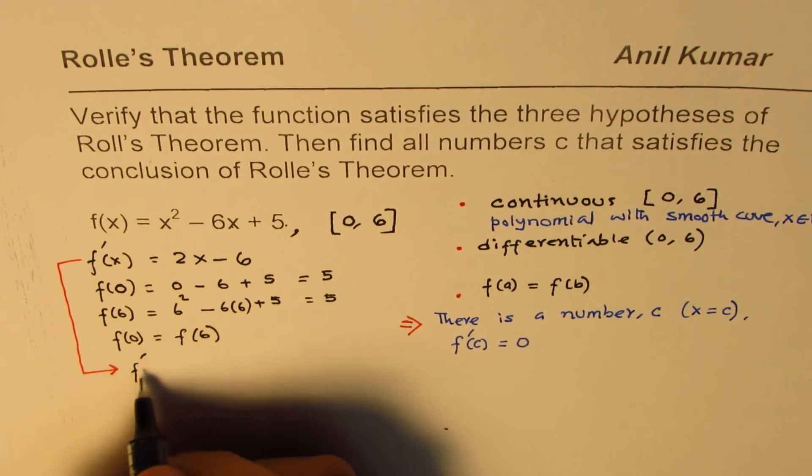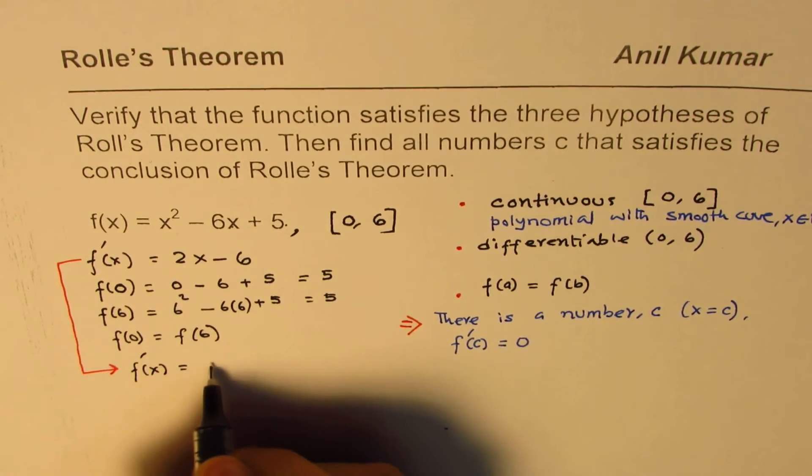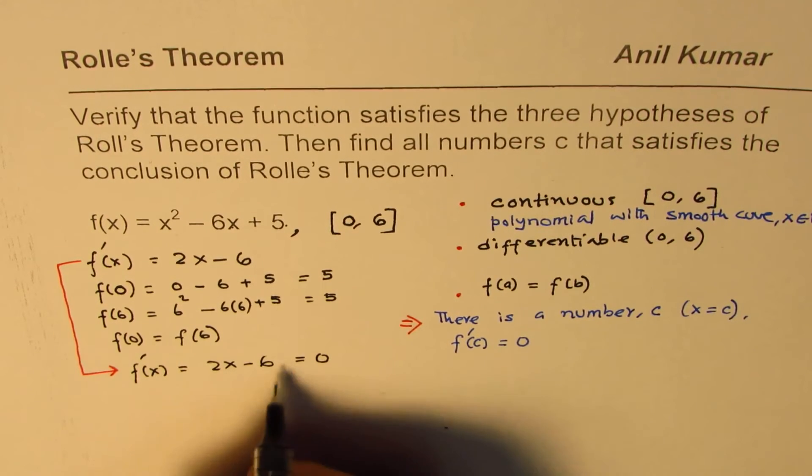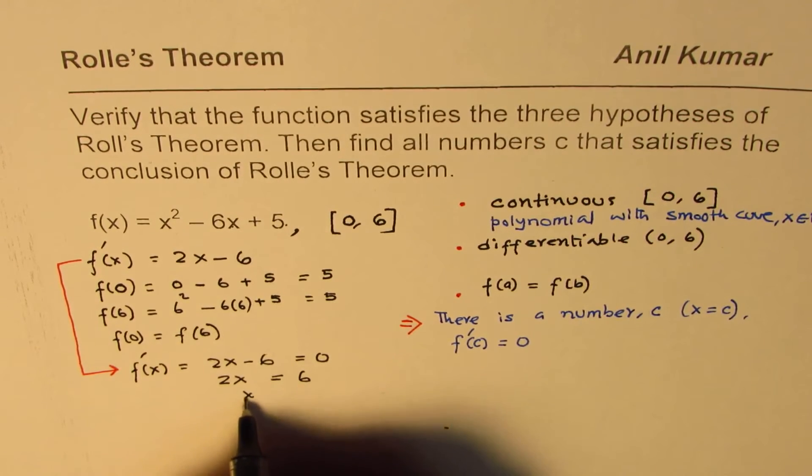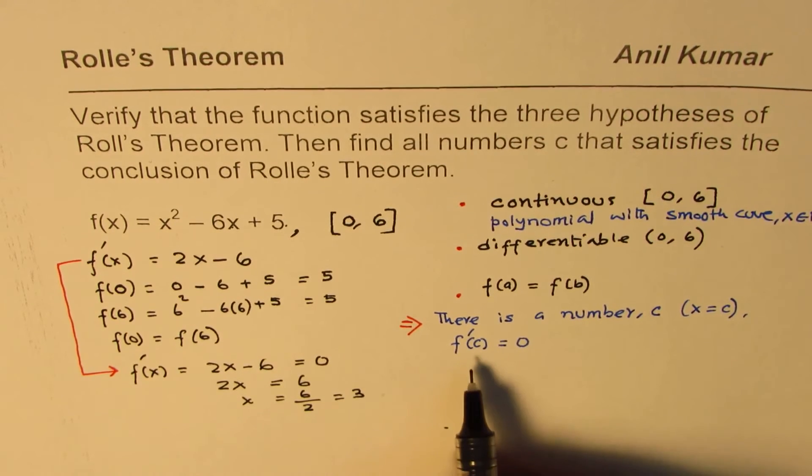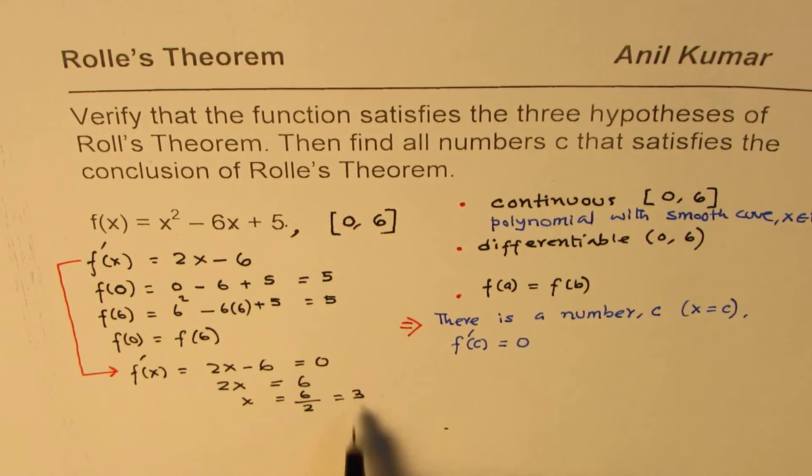So, we can say f'(x), which equals 2x - 6. If I equate to 0, what is x? We could write this as 2x = 6, or x = 6/2, and that is 3. So, c is 3.